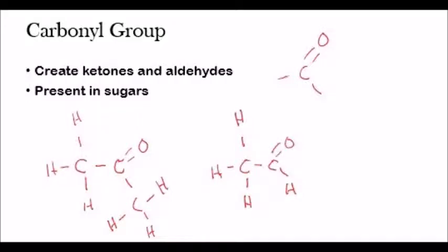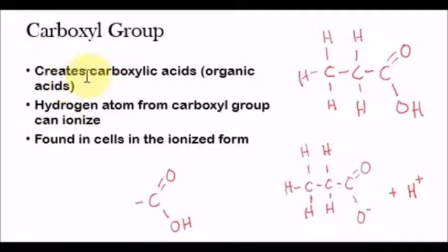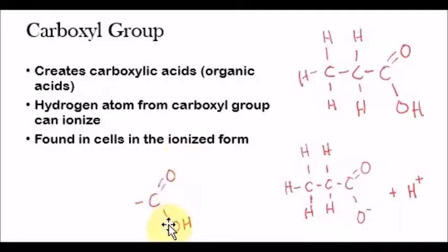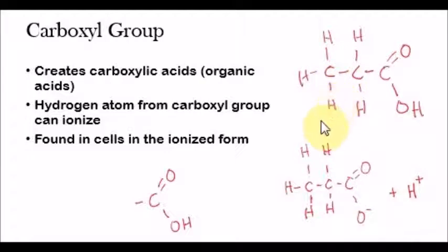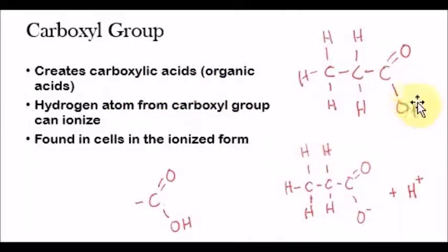The third group is a carboxyl group, and it creates carboxylic acids or organic acids. The carboxyl group has a carbon double bonded to an oxygen atom, and also single bonded to OH, with a single bond that can attach to something else. For example, this is propanoic acid — we have a group on one side and a carboxyl group attached to it. The reason why they're called acids is because the hydrogen atom within the carboxyl group can ionize.